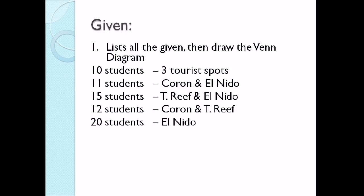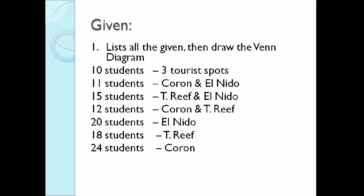20 students, El Nido. 18 students, Tubbataha. 24 students, Coron. With a total of 50 students. So ngayon, ay naisa na natin lahat ng given sa problem.